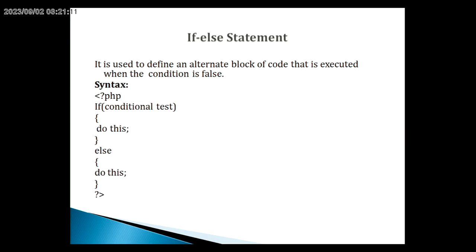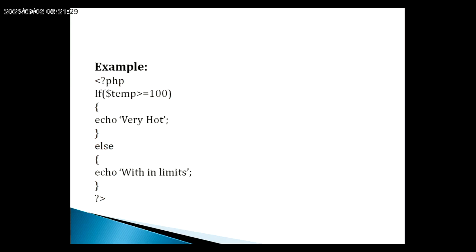The next type is the if-else statement. It is used to define an alternate block of code that is executed when the condition is false. The syntax is: if condition, do this; else, do this. For example, if the temperature is greater than or equal to 100, print 'very hot'; else print 'within a limit'.